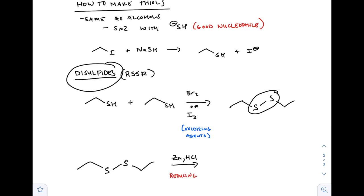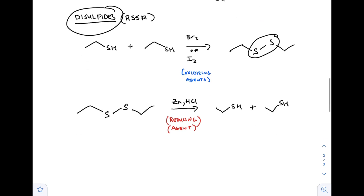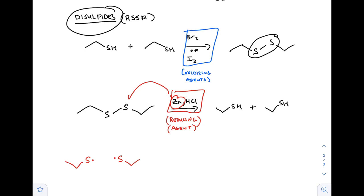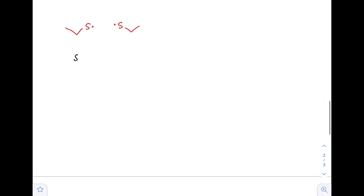We made disulfide bonds with oxidizing agents, so we break them with reducing agents. Our reducing agent in this case is zinc and HCl. Anytime you have an elemental metal like zinc, it's going to give electrons — that makes it a reducing agent by definition, because metals want to give off those electrons. Bromine and iodine are great oxidizing agents for forming disulfides.